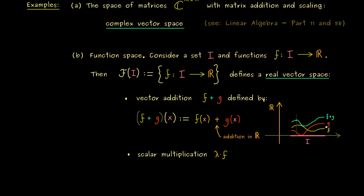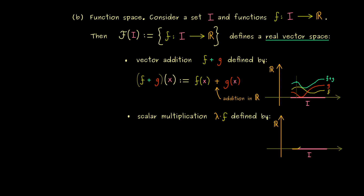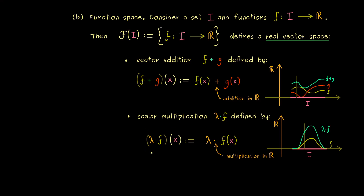We can visualize this in the graph again, and it looks a little bit simpler because we only have one function f. The idea is the same — we fix a point in I and scale the value of the function f at this point. For example, if we scale with a factor 2, we get a new value at that point. We do that everywhere and get a new graph — the graph of the function lambda times f. Formally, we define this new function by specifying what happens when we put in a point x: we get the value by putting x into f and scaling with the factor lambda.